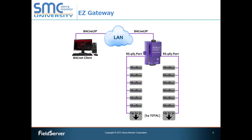Once the correct hardware, license, and drivers have been established, you'll be left with a decision as to how to achieve configuration of the field server. Note that the selection of drivers has only provided the field server with the capability to provide a certain gateway solution. In order to implement the solution, the field server needs to be configured for the application in mind, which involves deciding on communication ports and related parameters as well as deciding which data points need to be mapped across. Video 3 in our quick start series provides an overview of configuration concepts if you wish to explore more deeply what is involved.